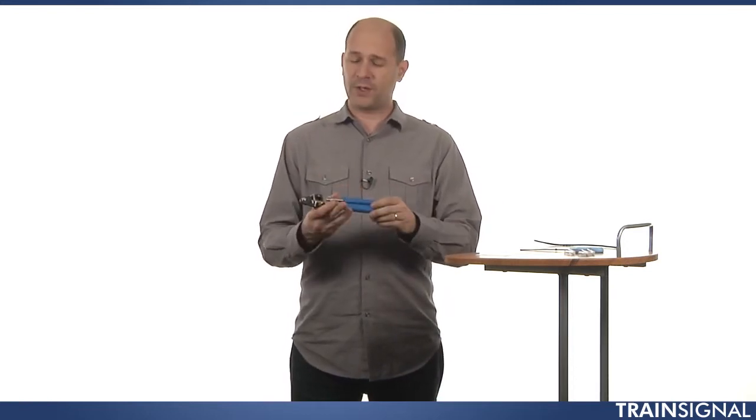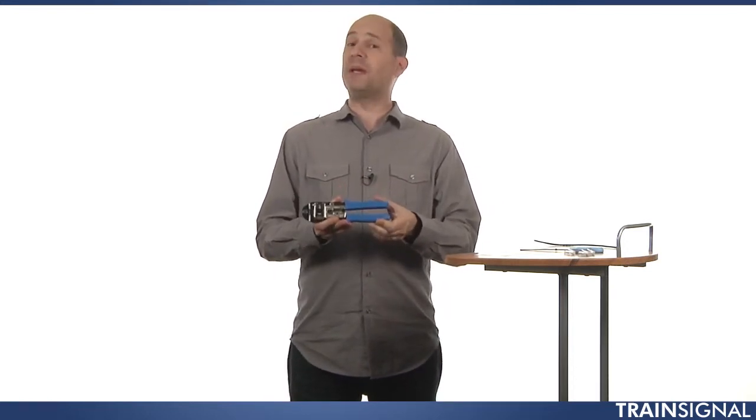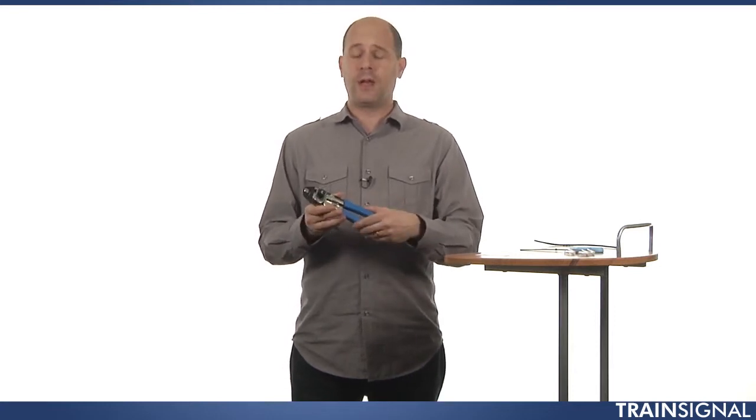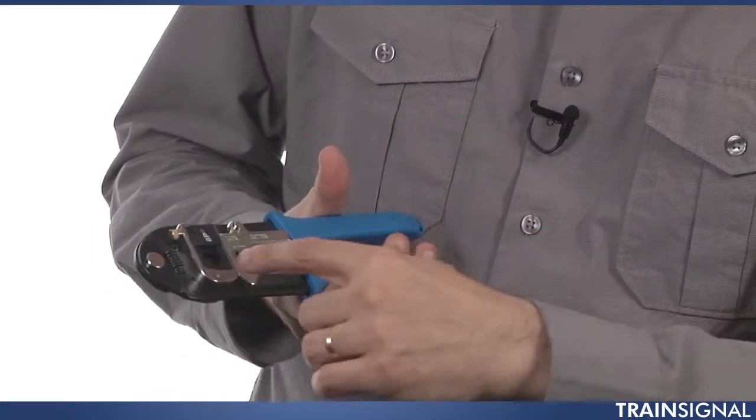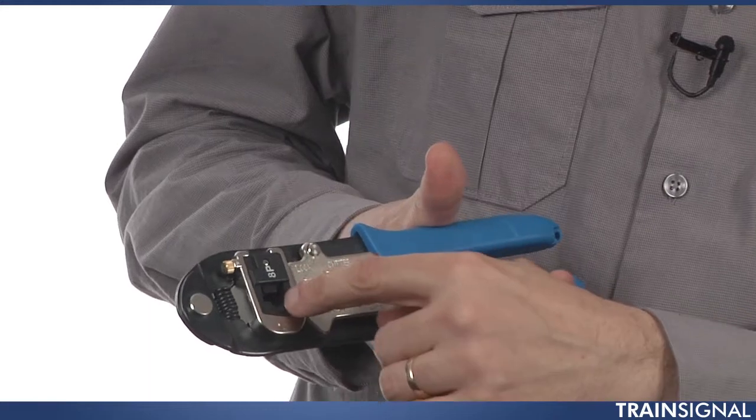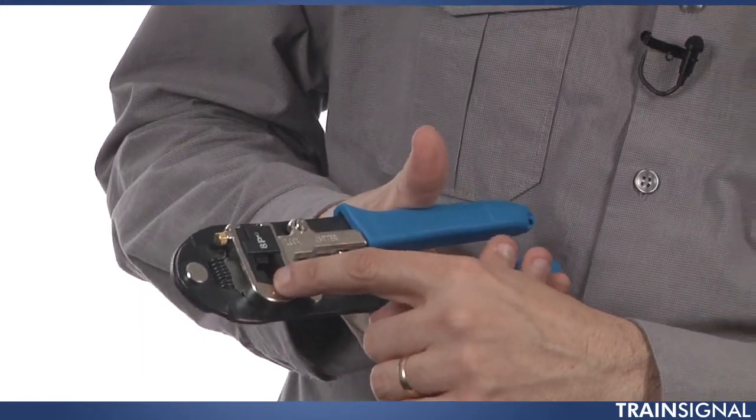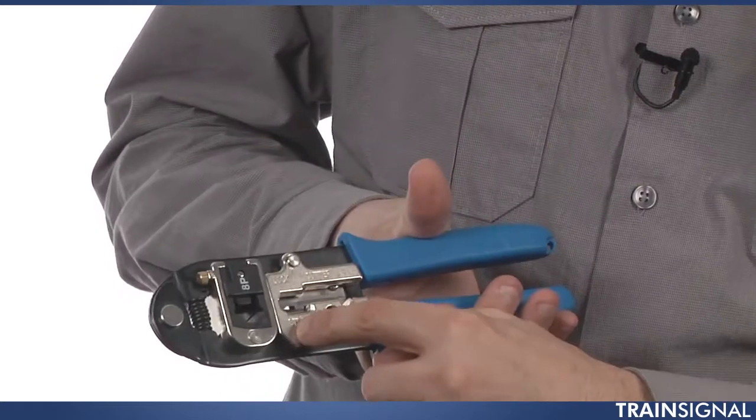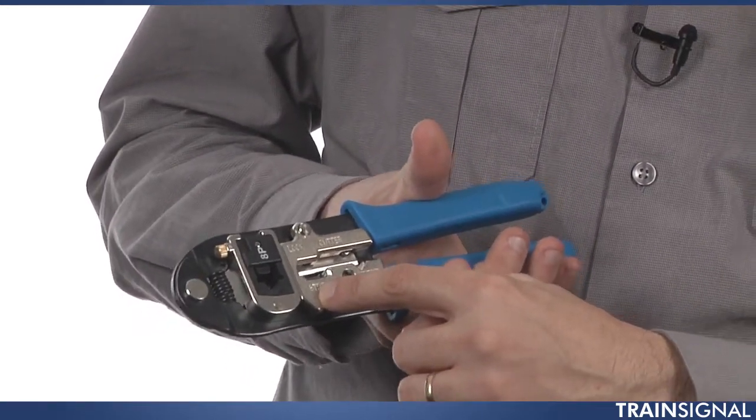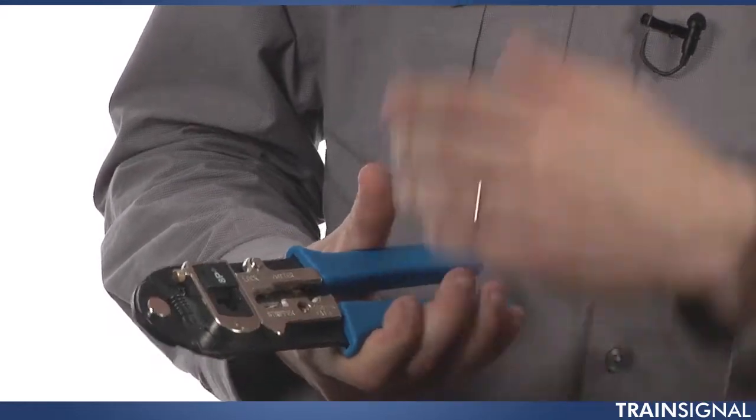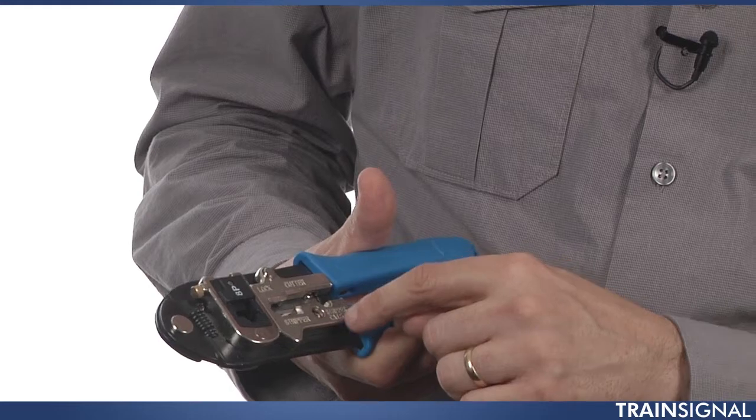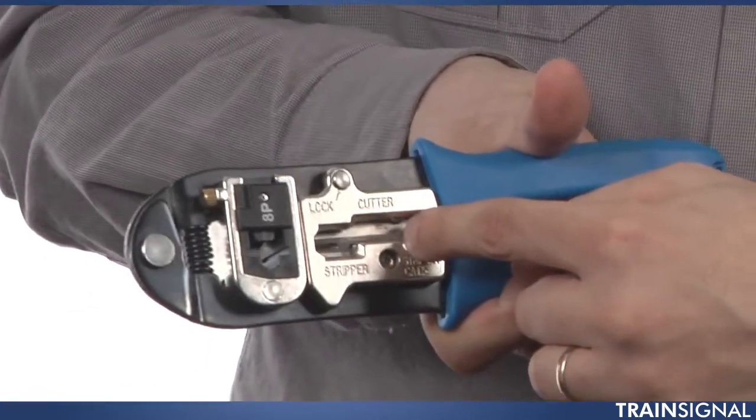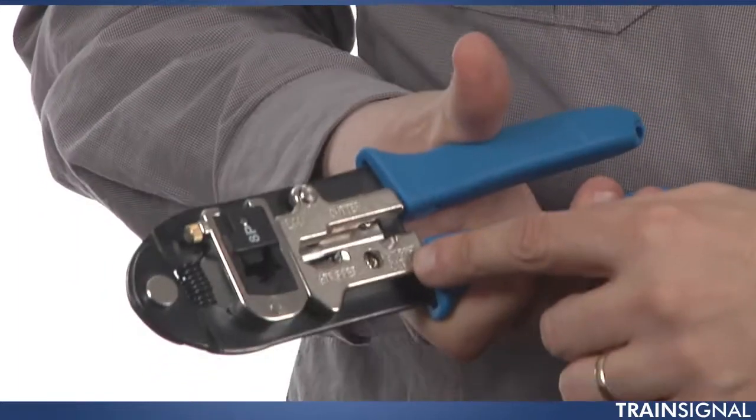The next item I have here is what is most commonly known as a crimping tool, although this particular crimping tool, I like to use it because it's a multi-purpose tool. Besides crimping, which that's right here where you see that RJ45 looking hole, we also have a stripper here, and then we also have a cutter where we can just cut the cable. But this last hole right here, this is the Cat5 stripper.